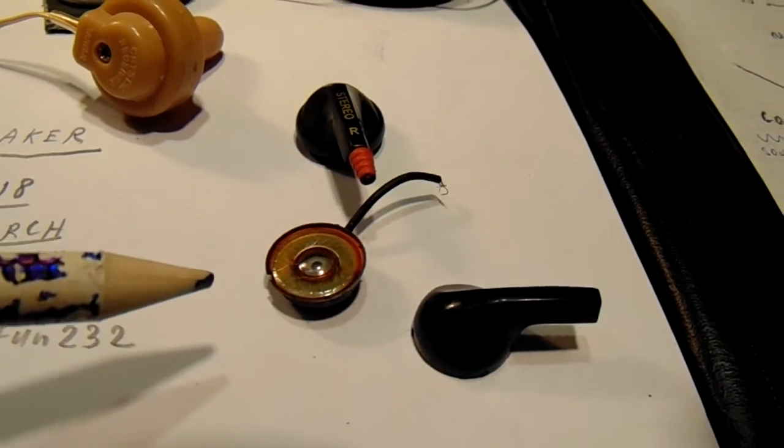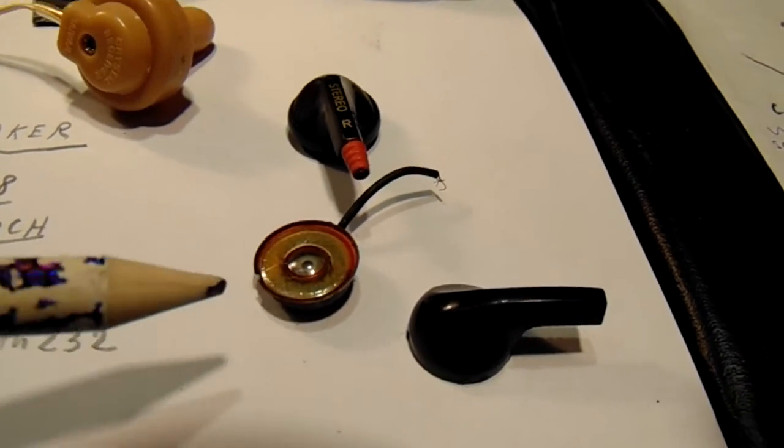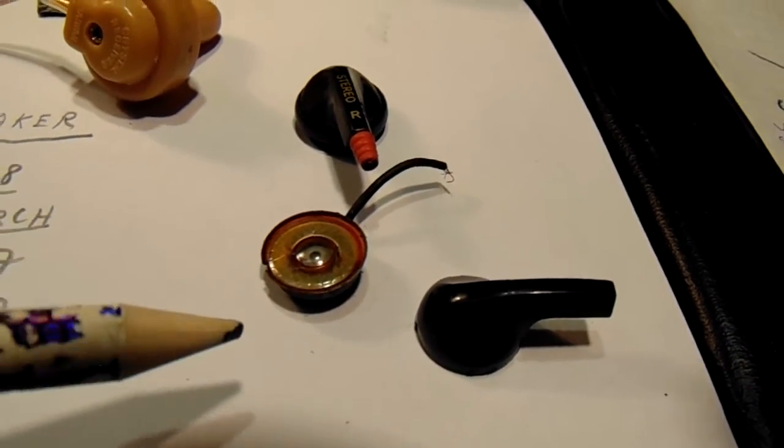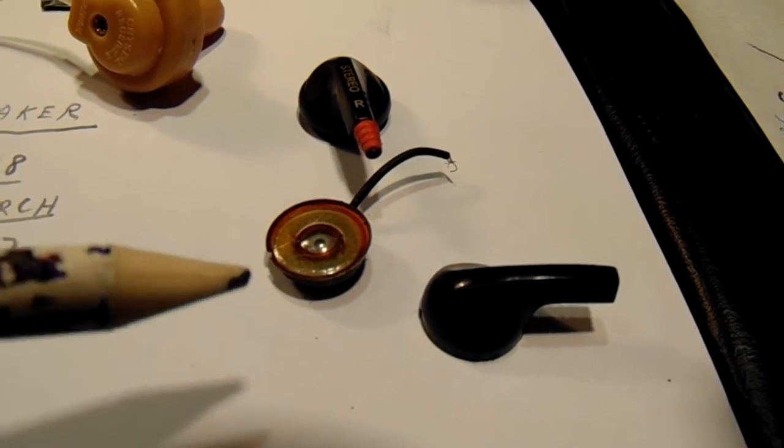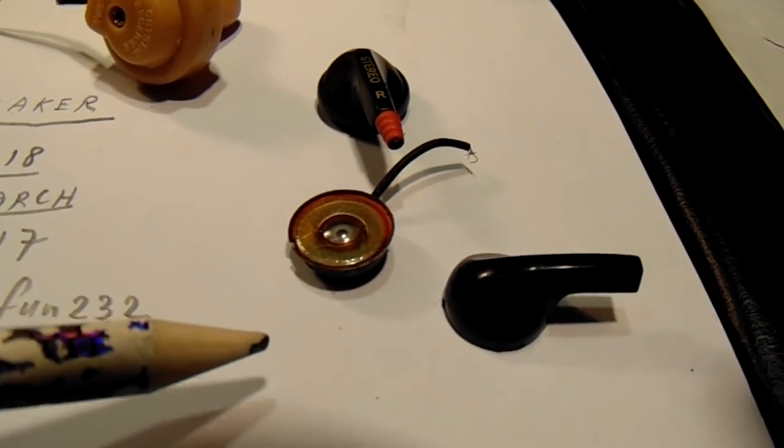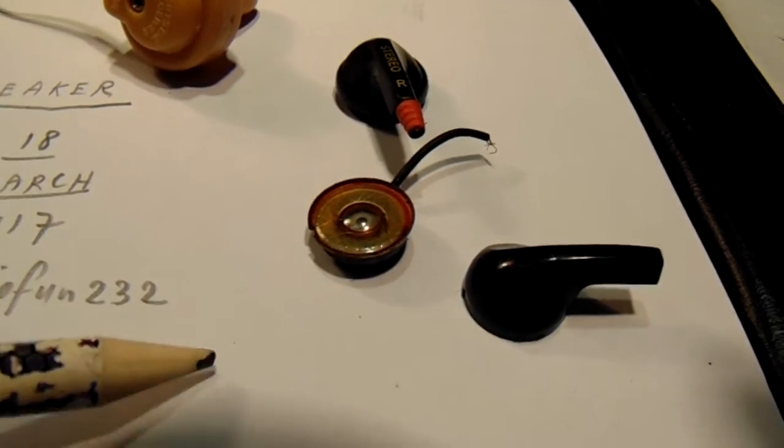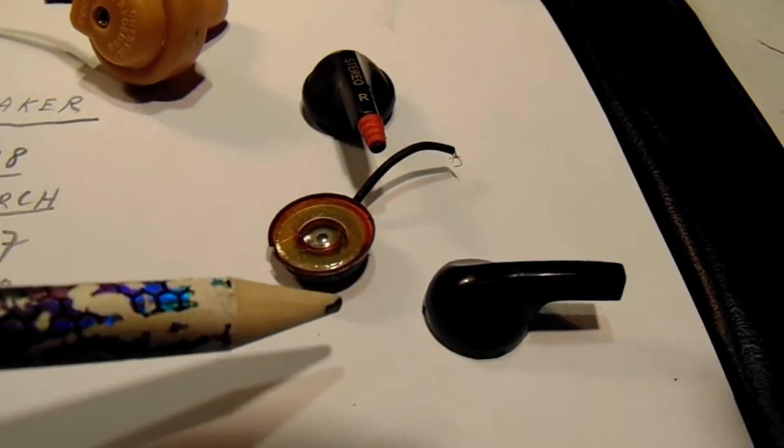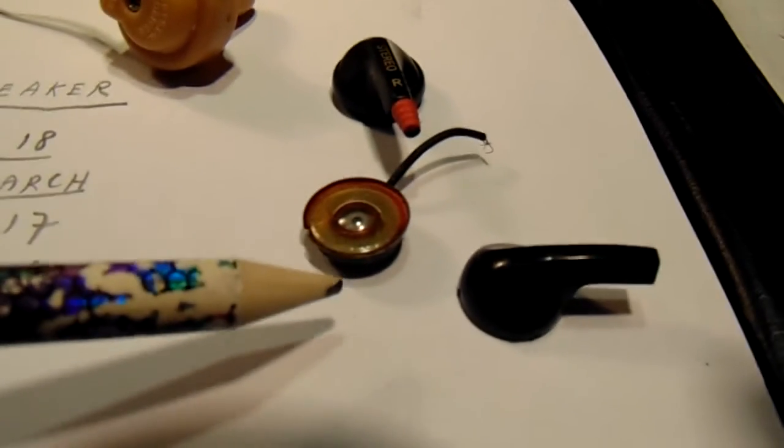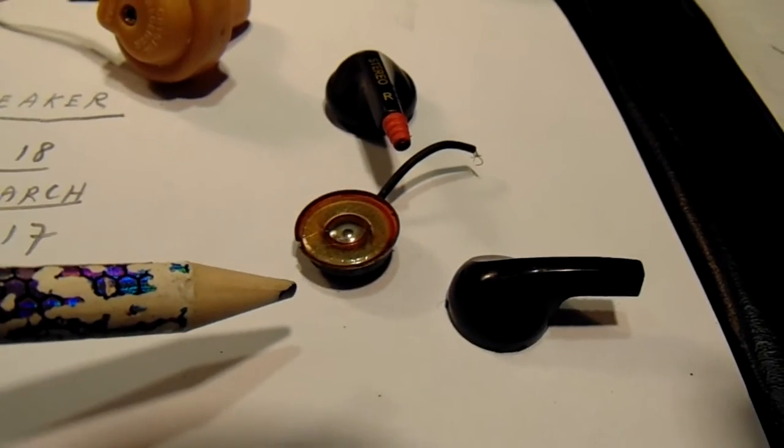And that has the effect that a cone doesn't have to be so big to reproduce also the very low frequencies. Low frequencies in general need big movements from the cone and big movements from the coil inside such a loudspeaker.